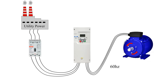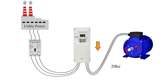But if we want to slow down the motor, the drive is able to cut the frequency down to say 20 Hz, which causes the motor to run much slower. Or we can bump it back up to a faster speed, at say 40 Hz. The drive allows us to have full control over the speed of the motor any time we want.